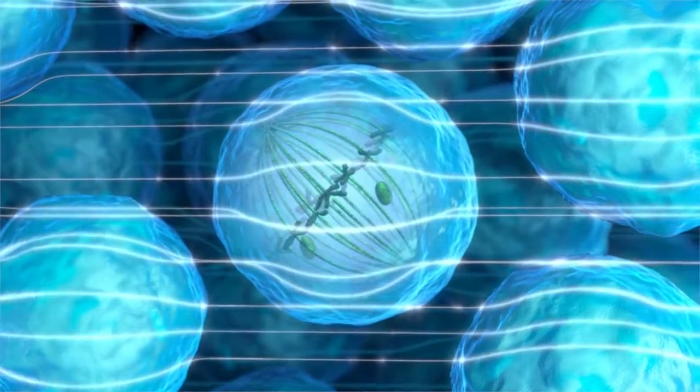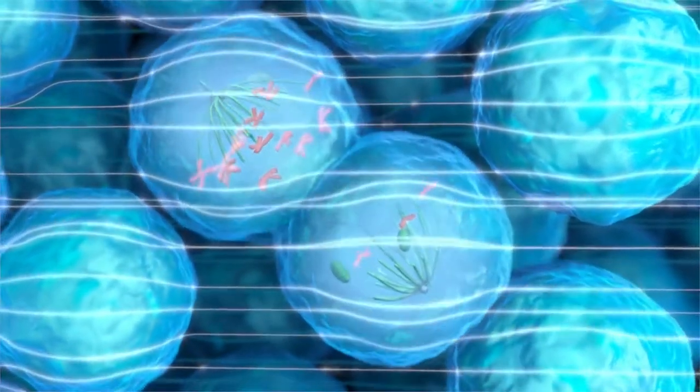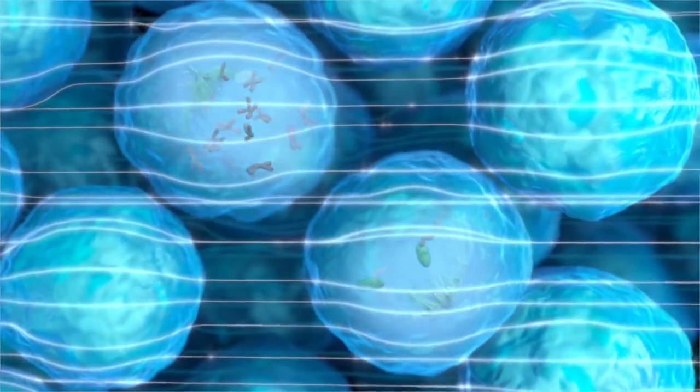Deformed spindle fibers resulting from TT fields can also lead to abnormal DNA segregation between daughter cells, and eventually, cell death.